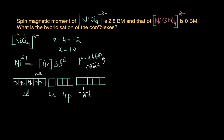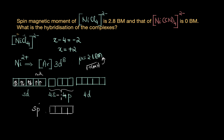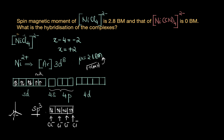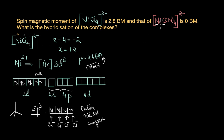Because we have unpaired electrons, we use the outer orbitals for bonding. With four ligands, we need 4 empty orbitals, so one 4s and three 4p orbitals hybridize to form 4 sp³ hybrid orbitals. The four Cl⁻ ions donate lone pairs to these empty sp³ hybrid orbitals, forming four coordinate covalent bonds. The hybridization is sp³, corresponding to tetrahedral geometry. Since outer 4s and 4p orbitals are used and not the inner 3d orbitals, NiCl₄²⁻ is an outer orbital complex.